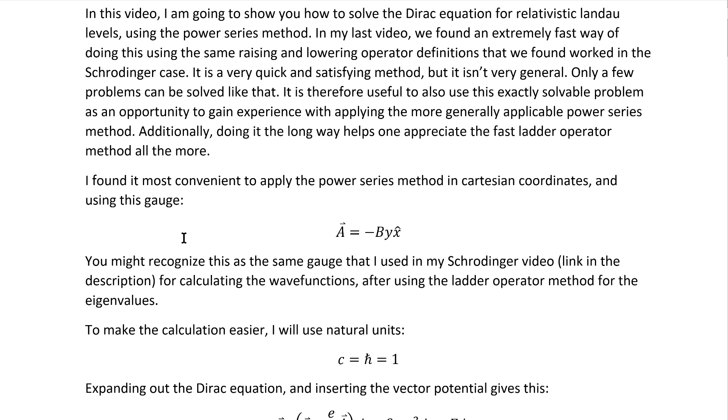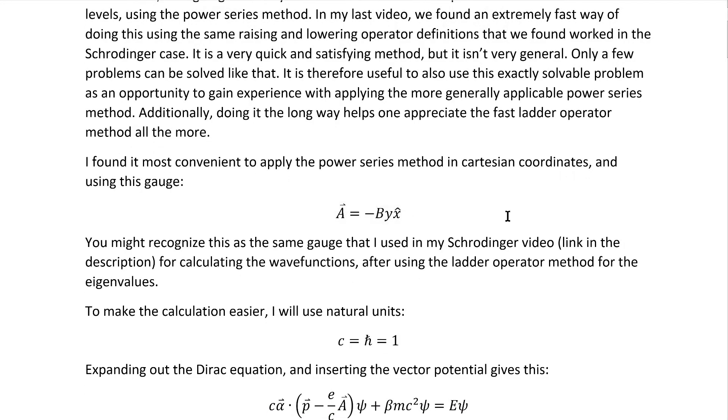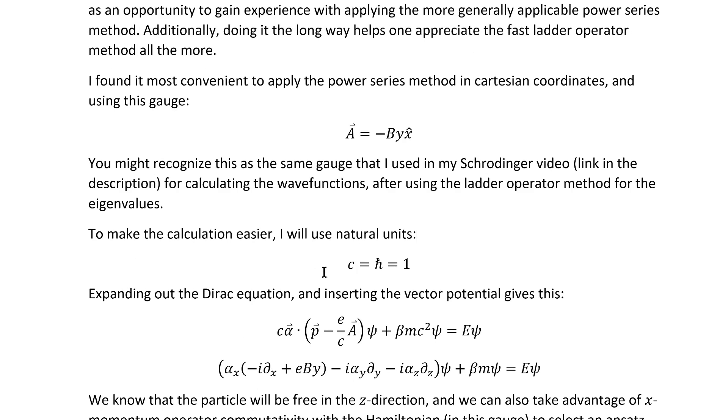Now, it's most convenient, as far as I have found, to apply the power series method in Cartesian coordinates and with this gauge, or at least a very similar one. This is the gauge that we used in my Schrodinger video, which I will link to in the description. It's the one called solving the Schrodinger equation for an electron in a constant magnetic field in the z direction. To make the calculation easier, I'm also going to use natural units.